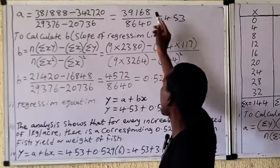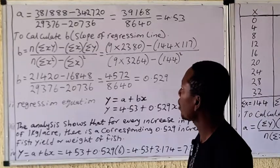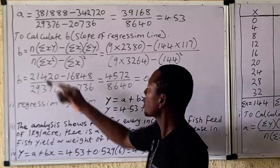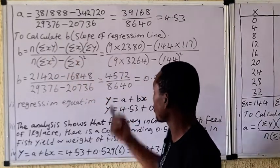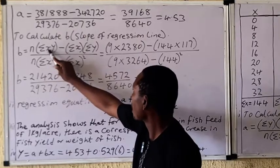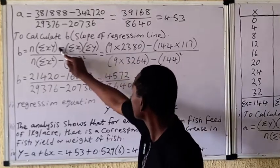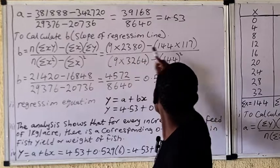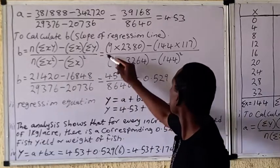Carry out the division and you have the answer for your y-intercept, or a. Now to calculate the slope of the regression line, use this formula: n times summation of xy, minus... The formula is on the board. The value of n is 9, and summation of xy from the table is 2380. Put it in brackets with the minus sign. Summation of x is 144 and summation of y is 117; put them in brackets with the multiplication sign.